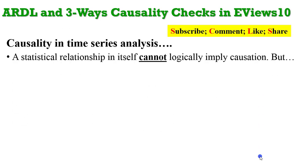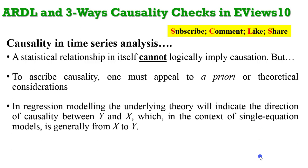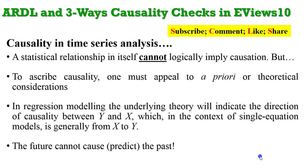Let's consider causality in time series analysis. A statistical relationship in itself cannot logically imply causation, but you can imply causation by putting that relationship to empirical testing. To ascribe causality, one must appeal to arbitrary expectations or theoretical considerations. In regression modeling, the underlying theory will indicate the direction of causality between the two variables Y and X, which in the context of a single equation model is generally from X to Y — X being the independent variable and Y the outcome variable. You should also know that the future cannot predict the past. It is the future value of Y that is being predicted by the past values of X.